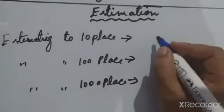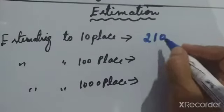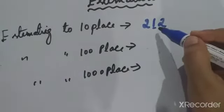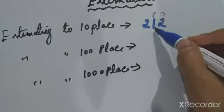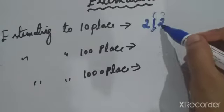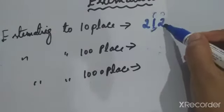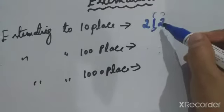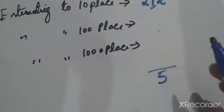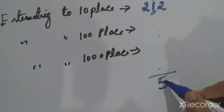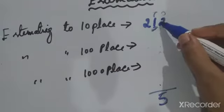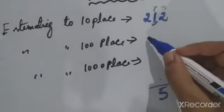Now we have to estimate or round off numbers to the tens place. For example, 212 is given. We have to round off 212 to the tens place. We check the next digit after the tens place — that digit is 2. Since 2 is less than 5, we approximate to the lower side, so 212 rounded to tens place is 210.